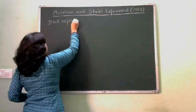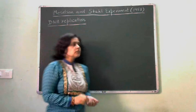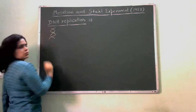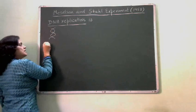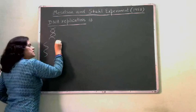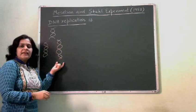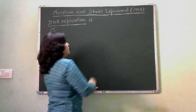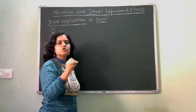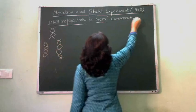Now, DNA replication — when DNA makes its copies, when it forms a copy, one strand of the parent DNA is used, and a new daughter strand is synthesized on it. So the DNA formed has one parent strand and one newly formed strand. That is why it is called semi-conservative. Half of the parent DNA is conserved in the daughter DNA. So this is the semi-conservative mode of DNA replication.